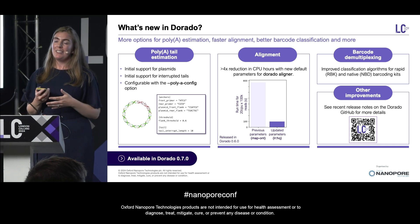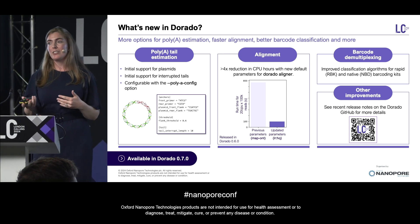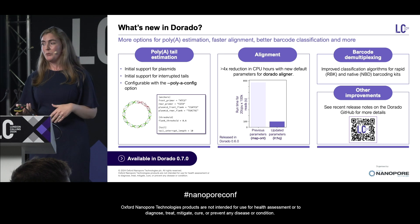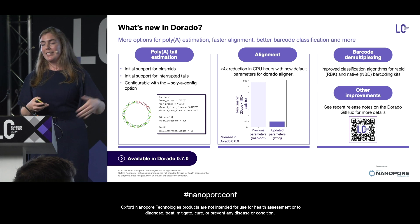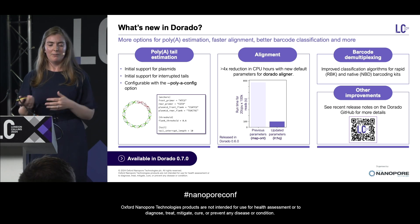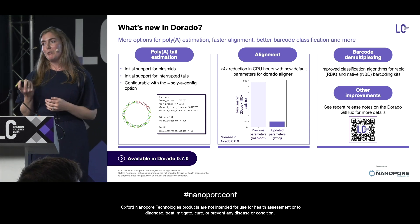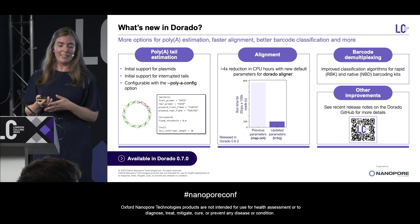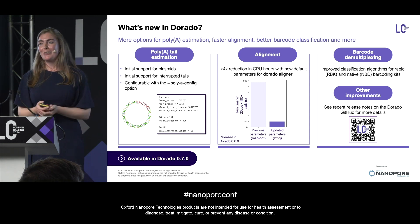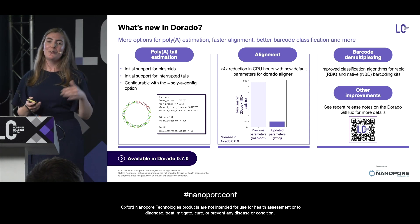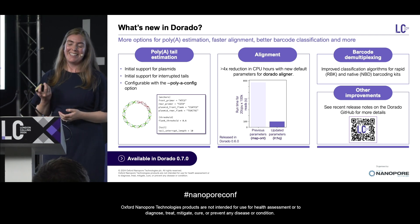We have also updated the default parameters in the Dorado aligner command, leading to a really large reduction in CPU hours required — more than a four times reduction. That went in with Dorado 0.6.0, which has been out for the last few weeks. We also have improvements to our barcode demultiplexing, particularly around rapid barcoding and native barcoding kits, and lots more. Please go take a look at our GitHub — you can see all the release notes with changelogs.